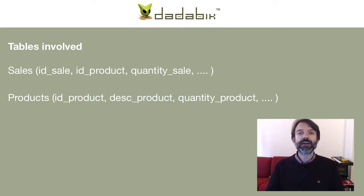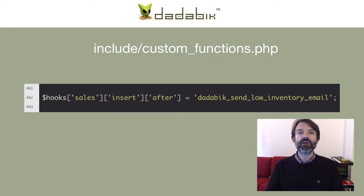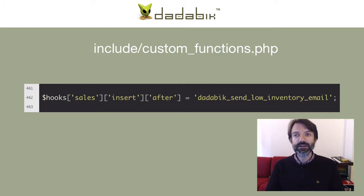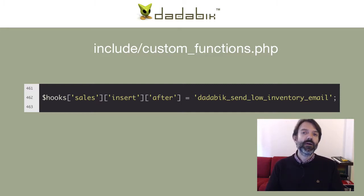How can you define a hook in your application? It's very easy. We open the custom_functions.php file and add an element to the associative array $hooks, defining which function we want to trigger. For example, with the line: $hooks['sales']['insert']['after'] = 'database_send_low_inventory_email', we are saying: for the table 'sales', for the after-insert operation, please execute the function called 'database_send_low_inventory_email'. I like long names — they make code easier to understand after months or years.